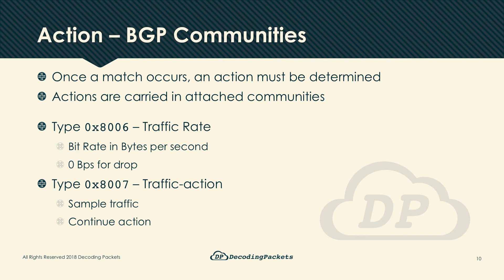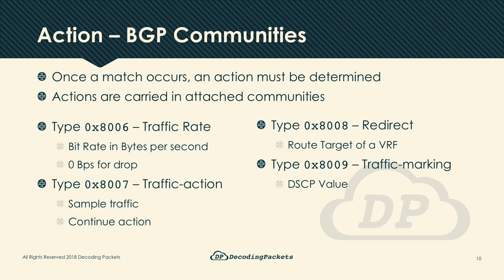It should be noted that community type 0x8007 is specifically not supported by Cisco devices — current support is Junos only. Next is type 0x8008, which carries a route target within it, allowing the client to redirect matching traffic to a VRF for further processing — for example, a VRF where security devices can inspect suspicious traffic. The VRF is identified by the route target carried in the community, so it must be defined on the client.